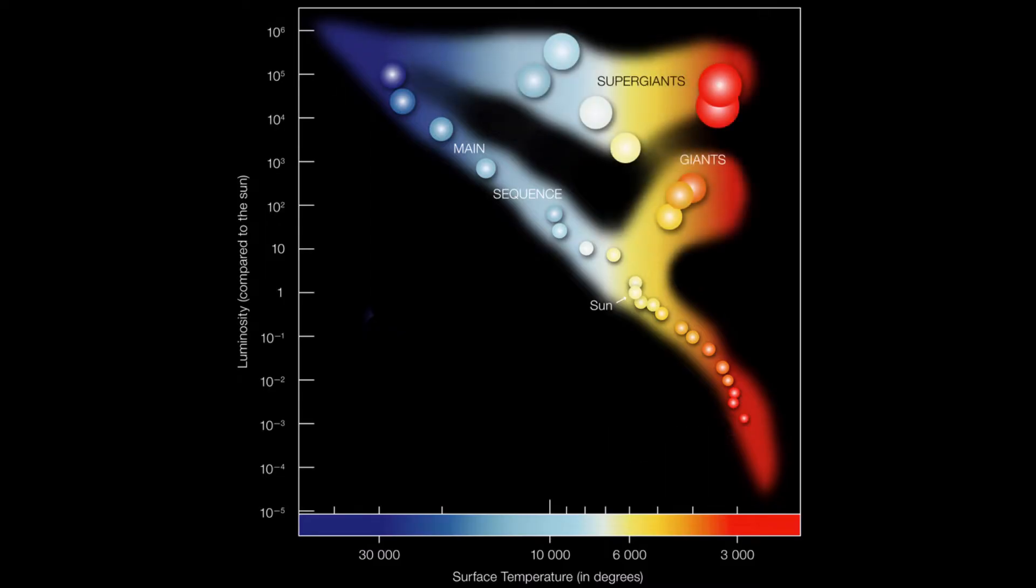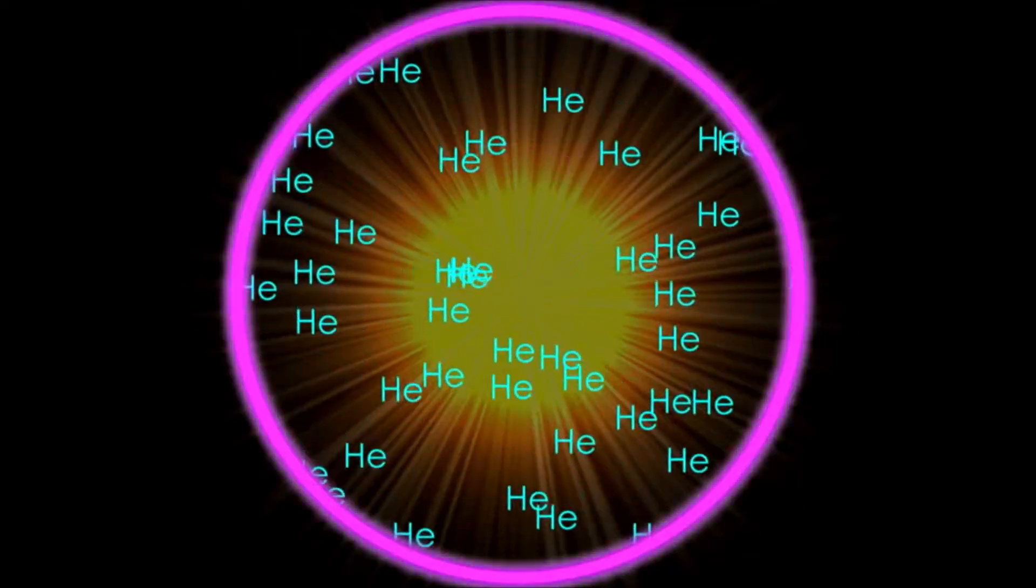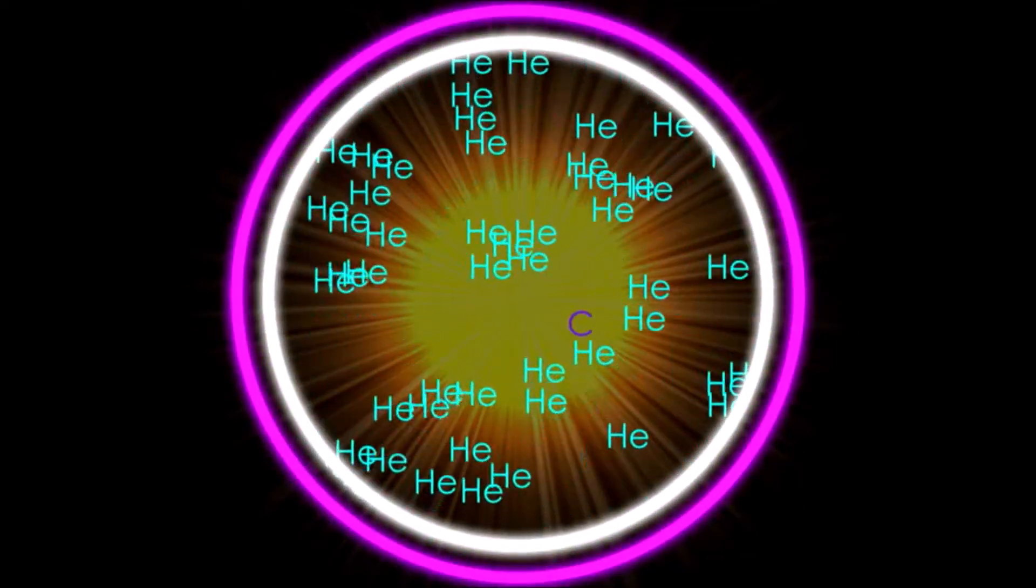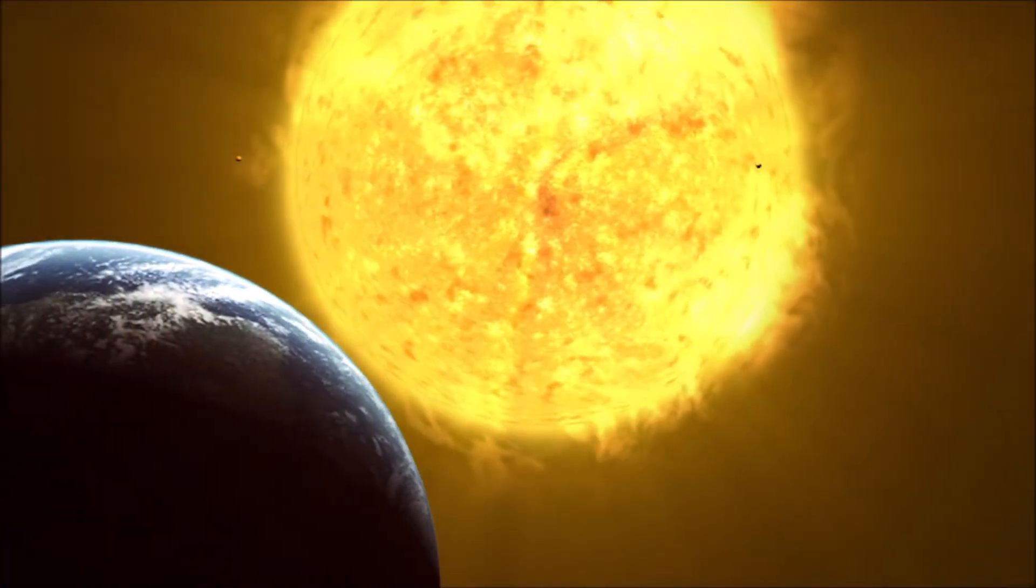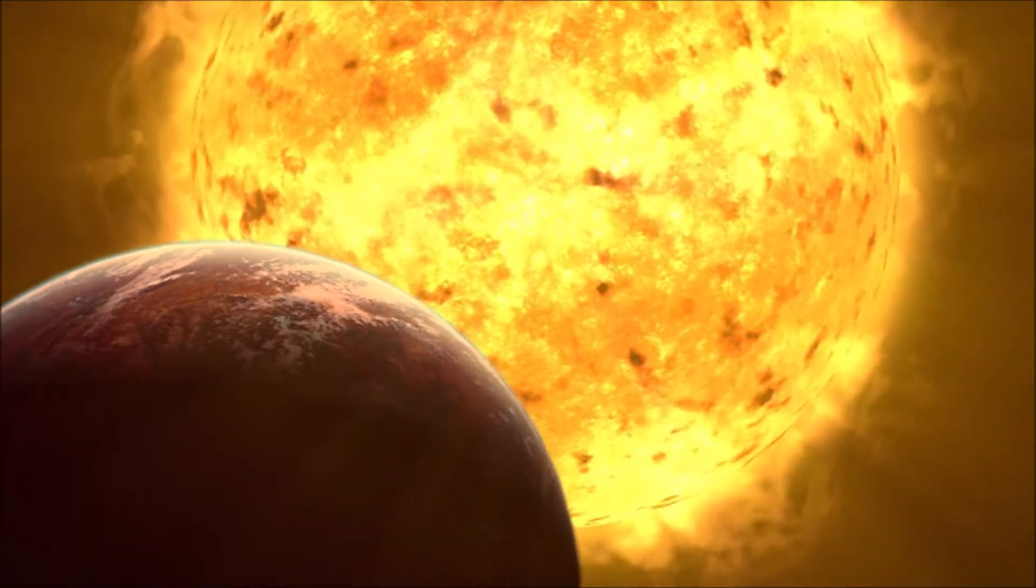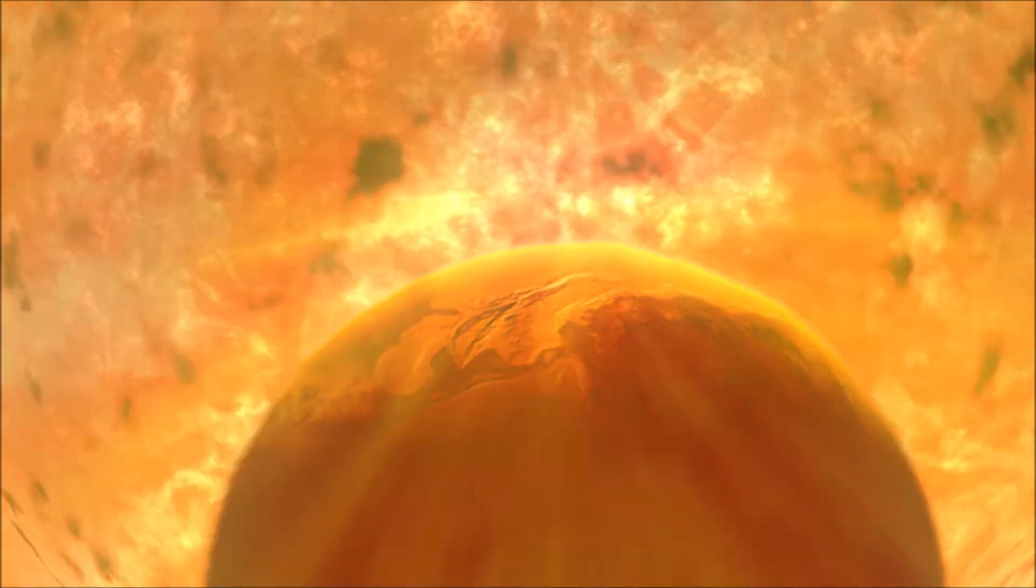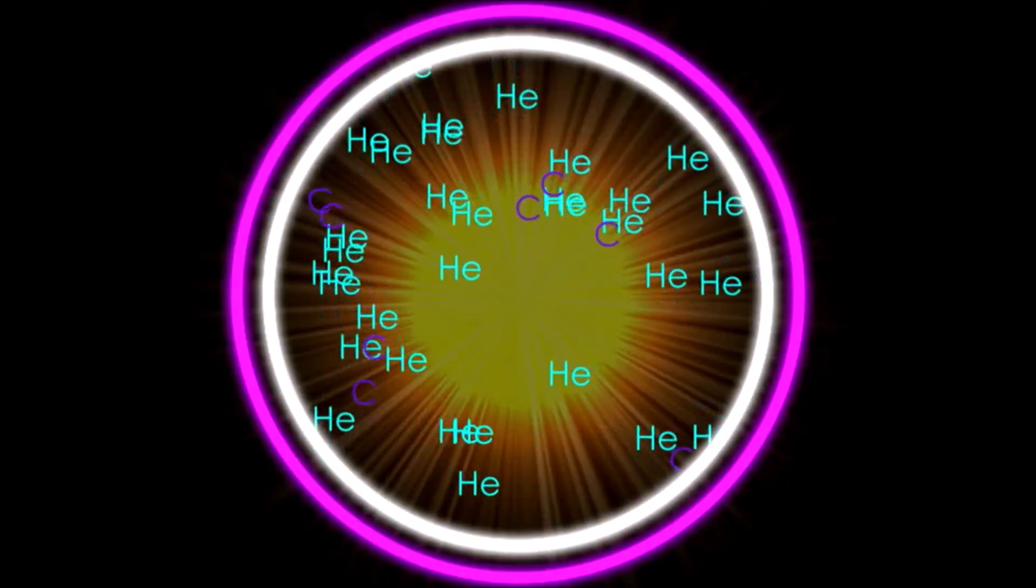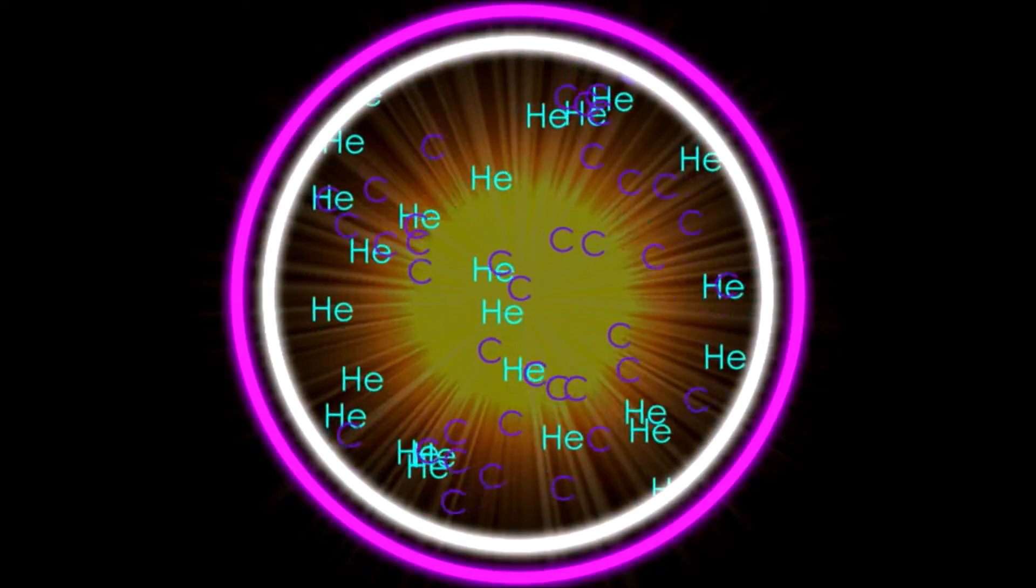Stars that have depleted their hydrogen cores develop into giants or supergiants, visible in the HR diagram above the main sequence. Their cores contract, creating enough heat and pressure to trigger fusion of heavier elements, and their outer layers expand to many times the star's original size. Due to their massive size, giant stars are many times more luminous than the Sun, even if they are cooler on the surface. Once a giant star has exhausted all possible fusion reactions in its core, it's off to the next phase of its life.